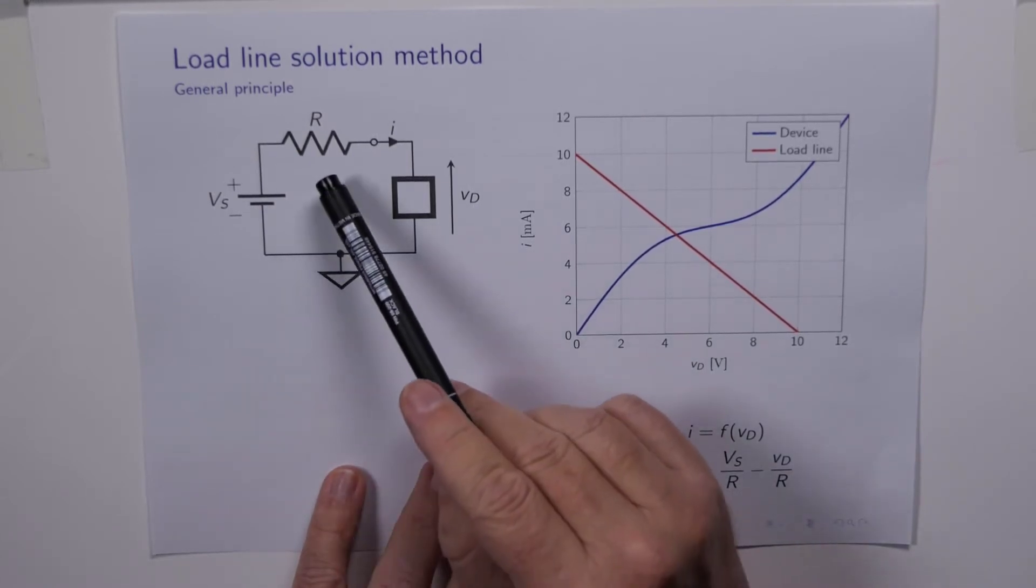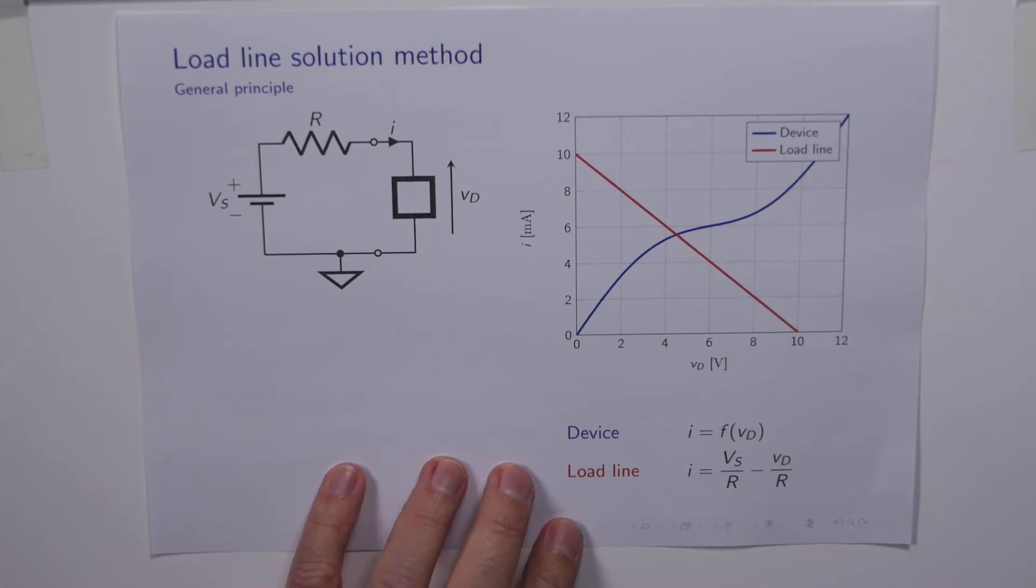The resistor here is usually just to stop too much current flowing into the device, especially if we don't know how the device behaves.